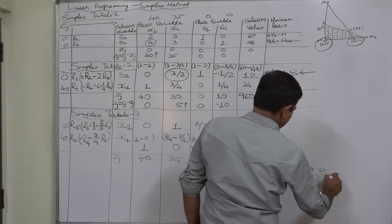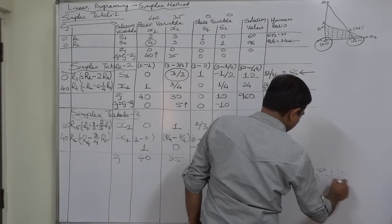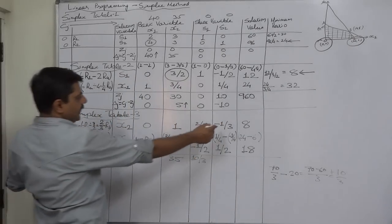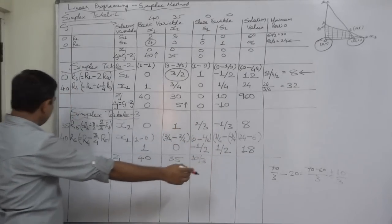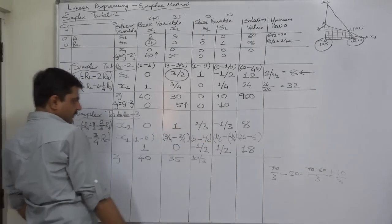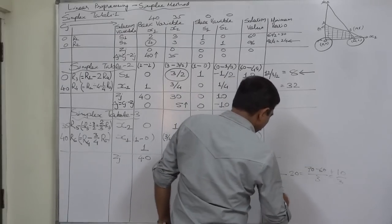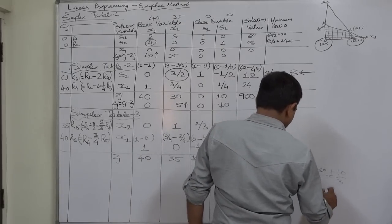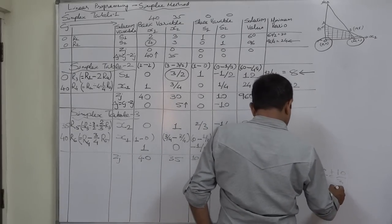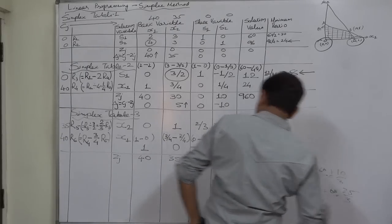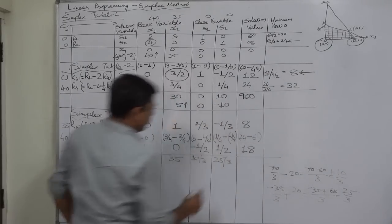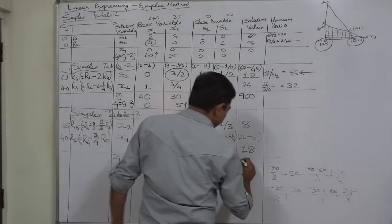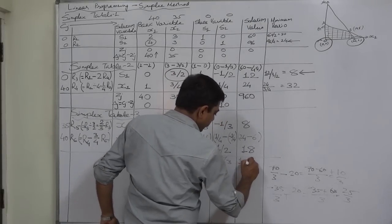Continuing Zj: 70/3 − 20 = (70 − 60)/3 = positive 10/3. Then 35 × (−1/3) + 40 × (1/2): that is −35/3 + 20 = (−35 + 60)/3 = 25/3. For the solution column: 35 × 8 = 280, and 40 × 18 = 720, so 280 + 720 = 1000.